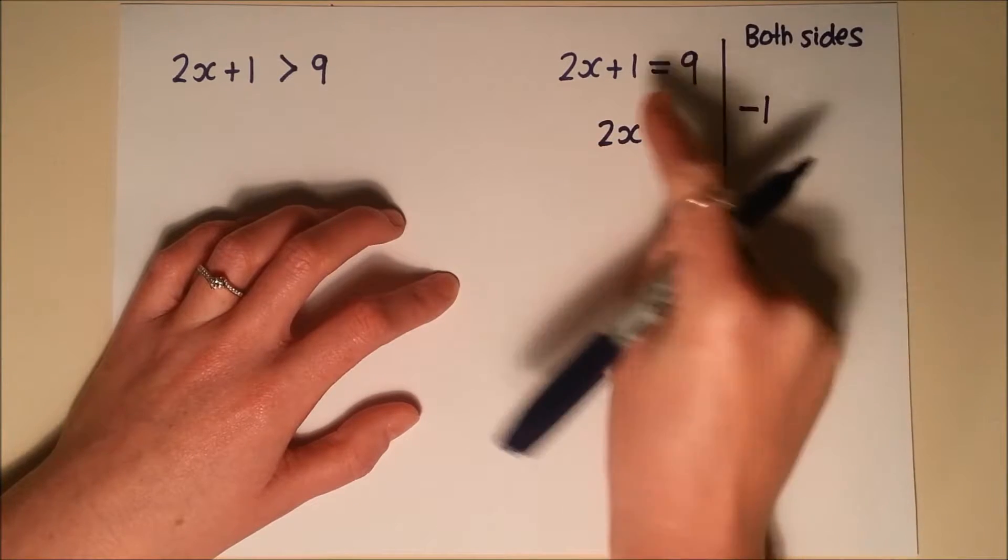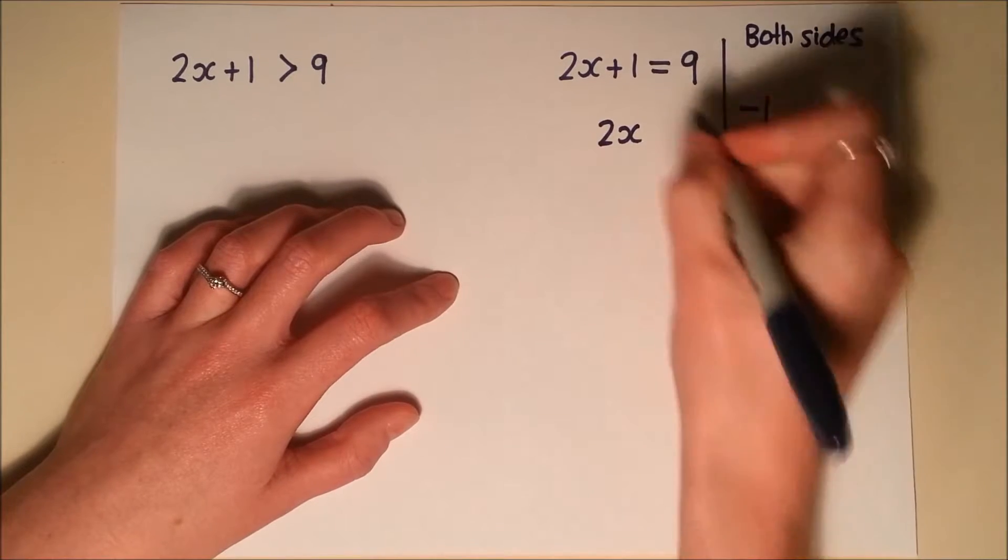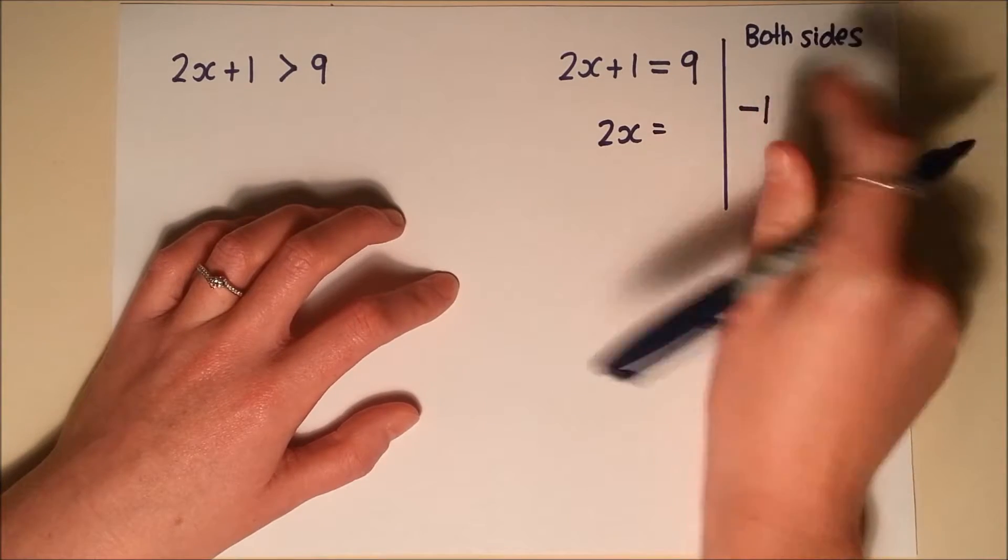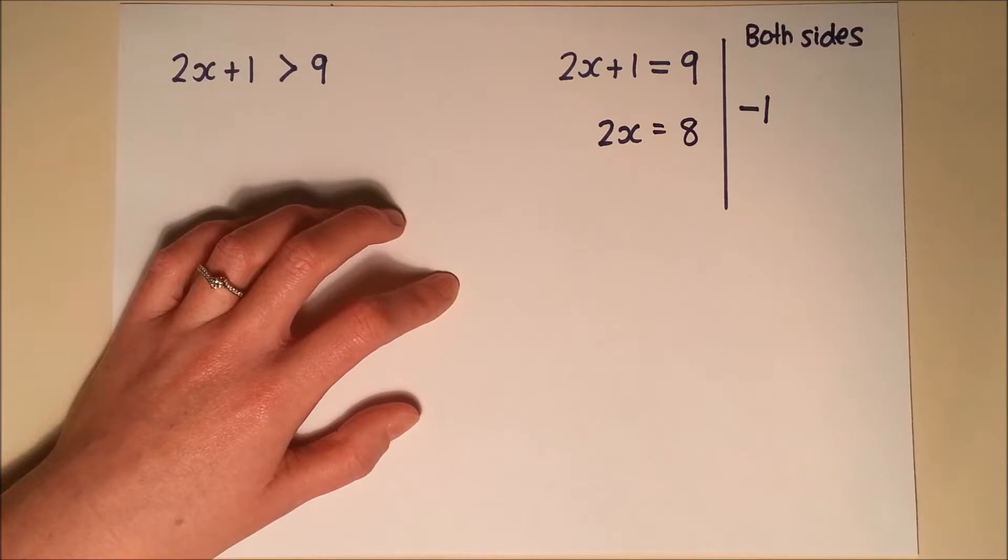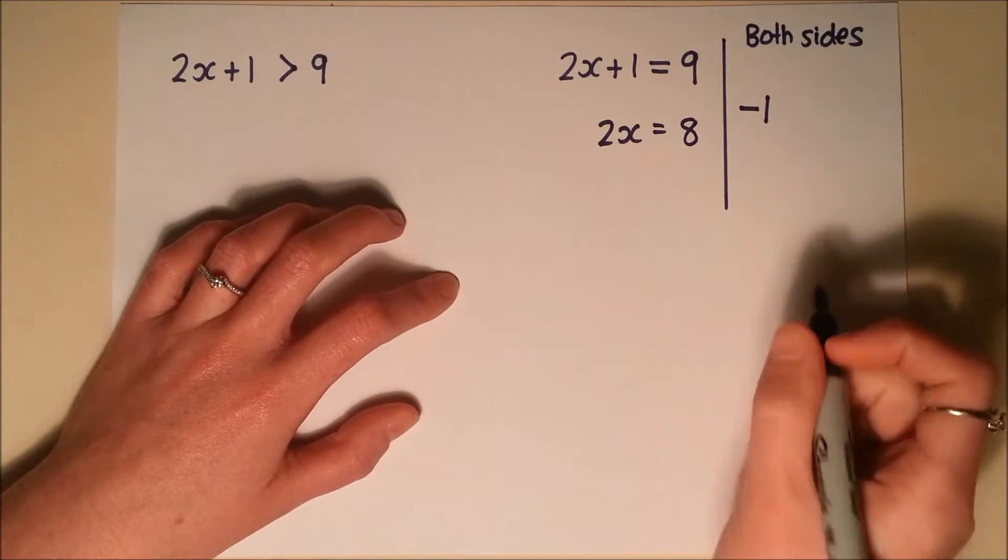Which leaves me 2x on the left hand side, because I've taken away 1. And leaves me 9 take away 1, which is 8 on the right hand side.